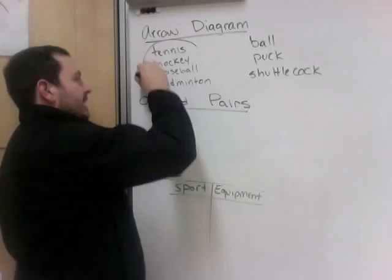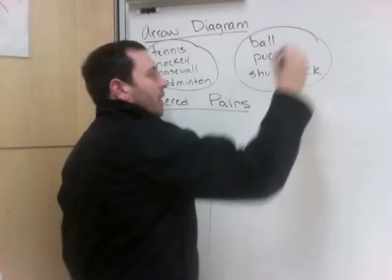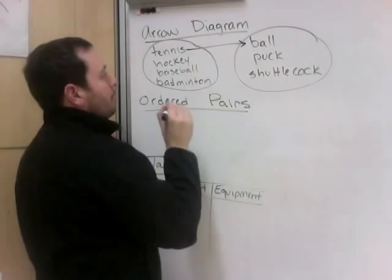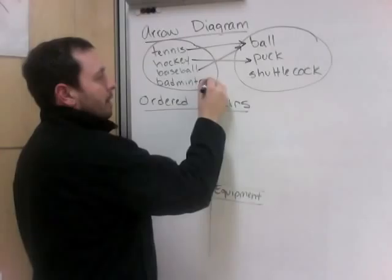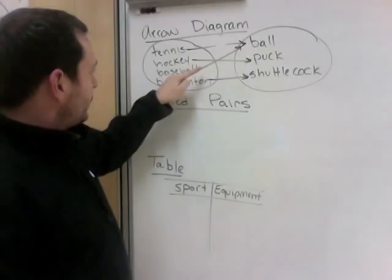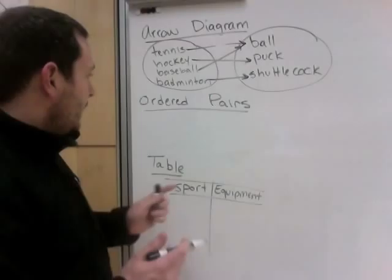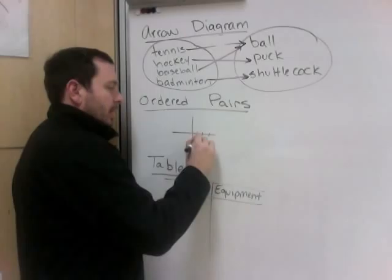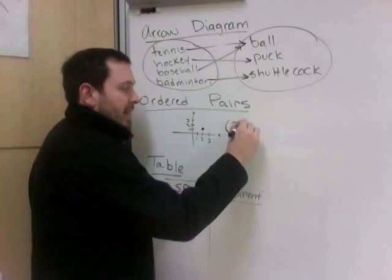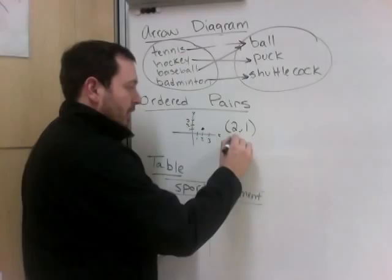I'm going to show you three ways to express different sets together — they're always relations, but sometimes functions and sometimes not. First: arrow diagrams. Here we have sports — tennis, hockey, baseball, badminton — and equipment — ball, puck, shuttlecock. The relation is 'sport uses equipment.' Tennis uses a ball, hockey uses a puck, baseball uses a ball, badminton uses a shuttlecock. Is this a function? Each domain goes to only one spot, so yes, it is a function.